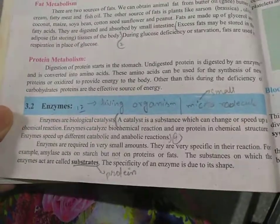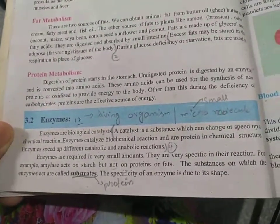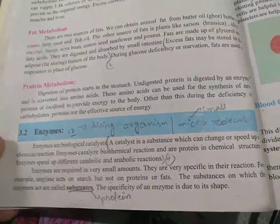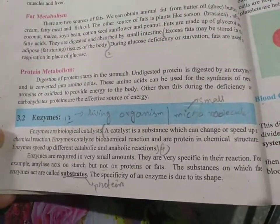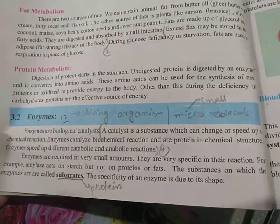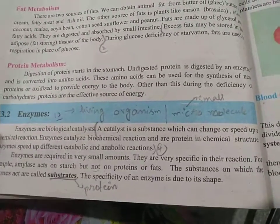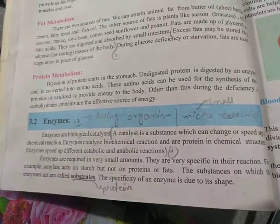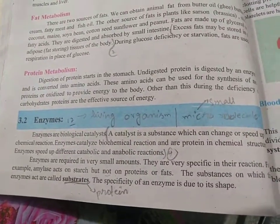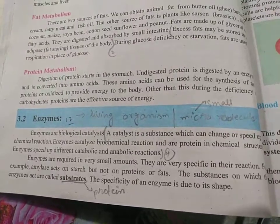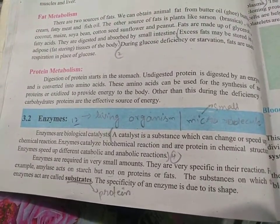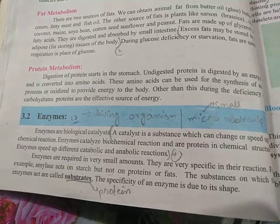What is a catalyst? Come to page 30, topic: enzyme. Here the marking is — a catalyst is a substance which can change or speed up a chemical reaction. Enzymes catalyze biochemical reactions and are protein in chemical structure. Enzymes speed up different catabolic and anabolic reactions.